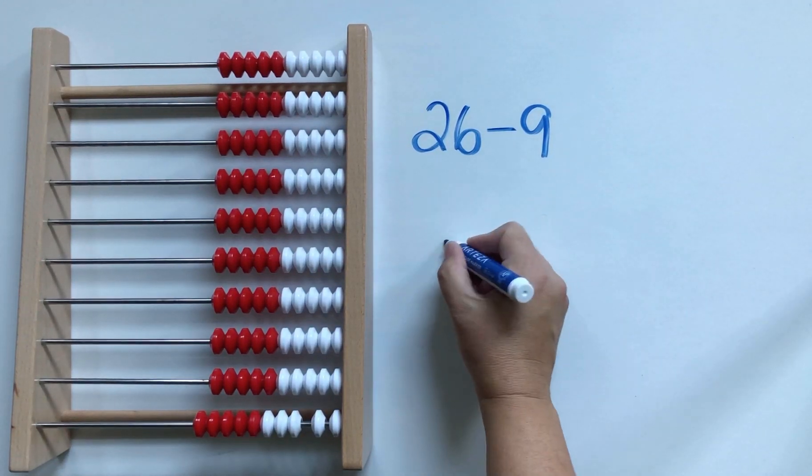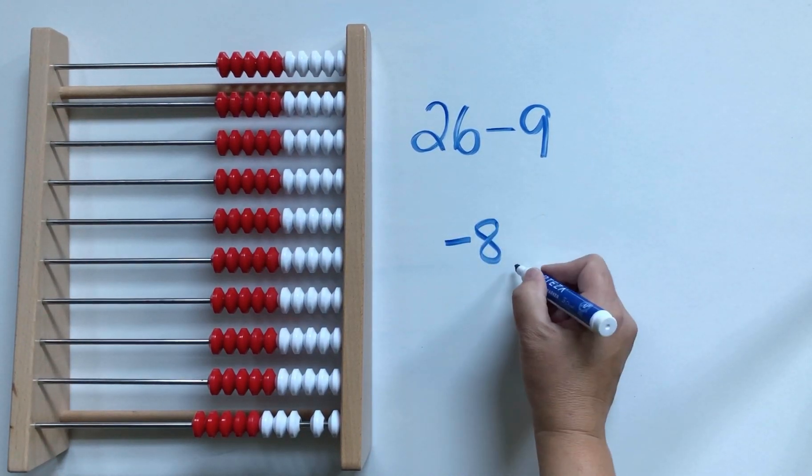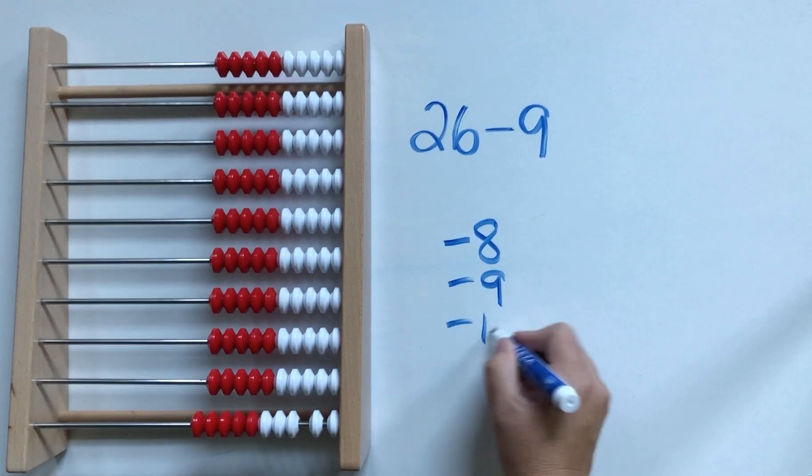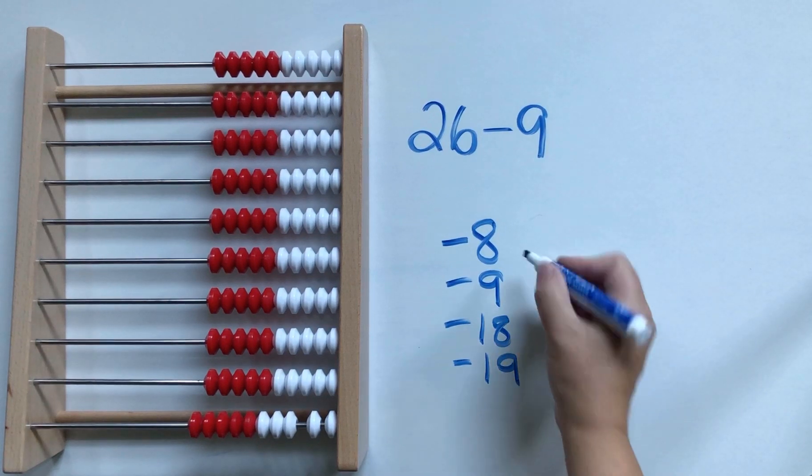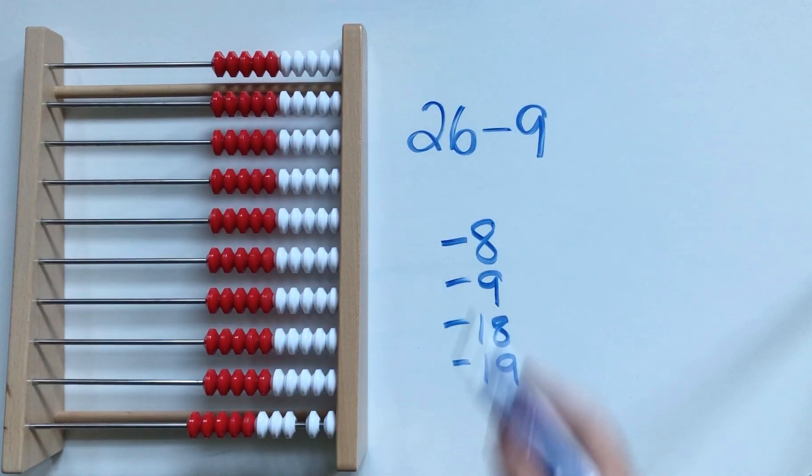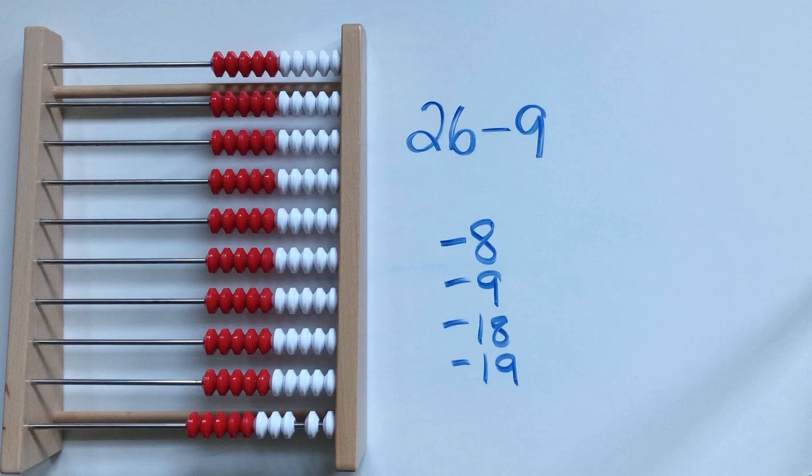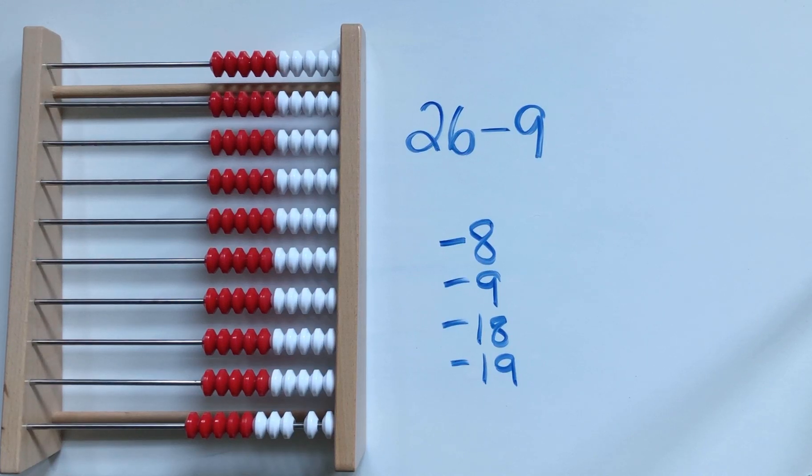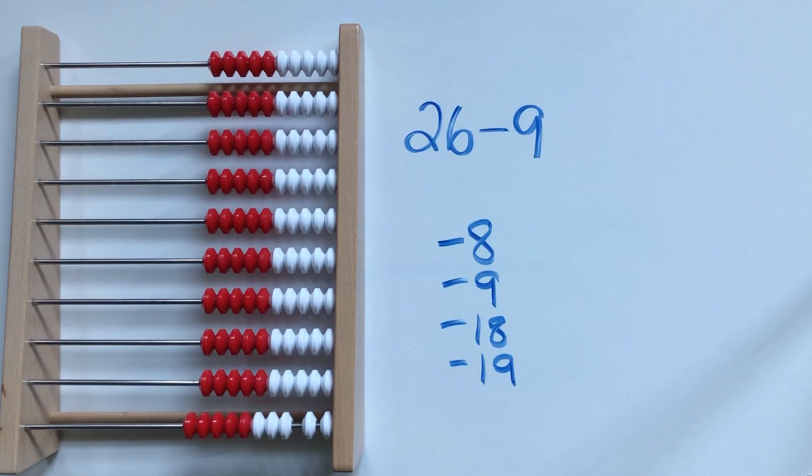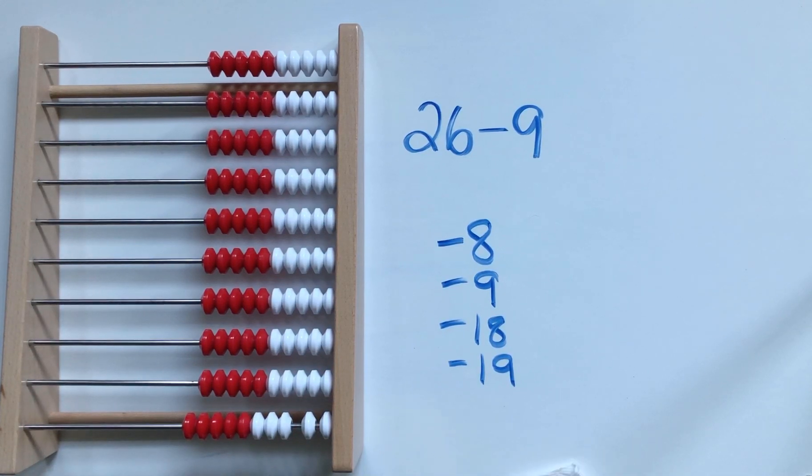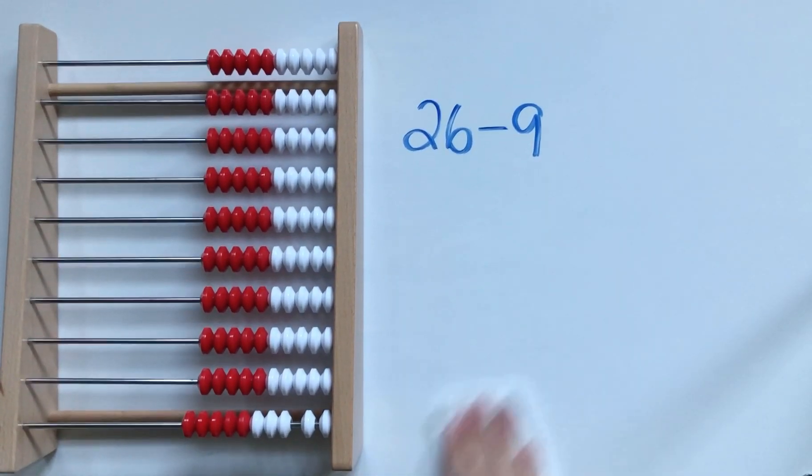So basically what we're learning is how to adjust one of the numbers in a problem and then make up for that adjustment later on. So really, more importantly than the name of this strategy is the idea behind this strategy. So please don't get hung up on having your students learn the names of the strategies.